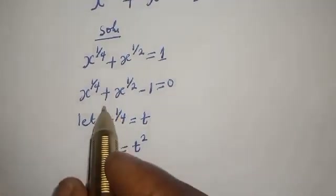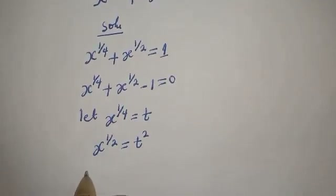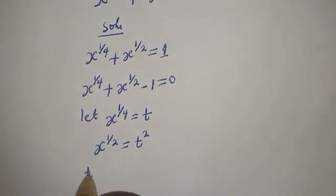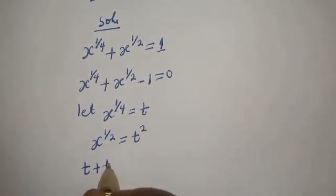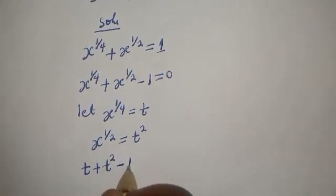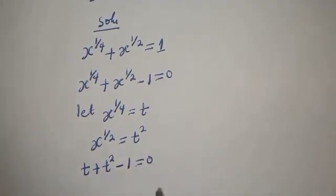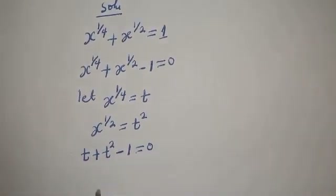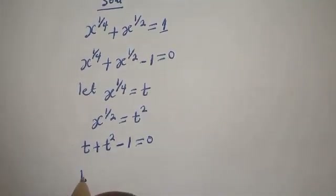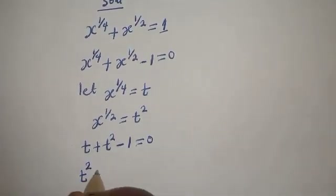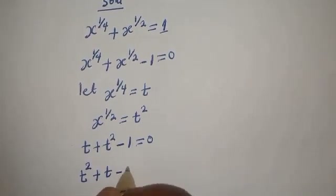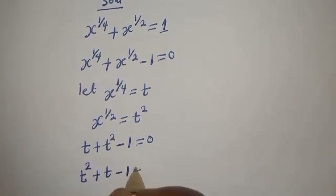Then, here we have t plus t squared minus 1 is equal to 0. Now, let's rearrange: t squared plus t minus 1 is equal to 0.